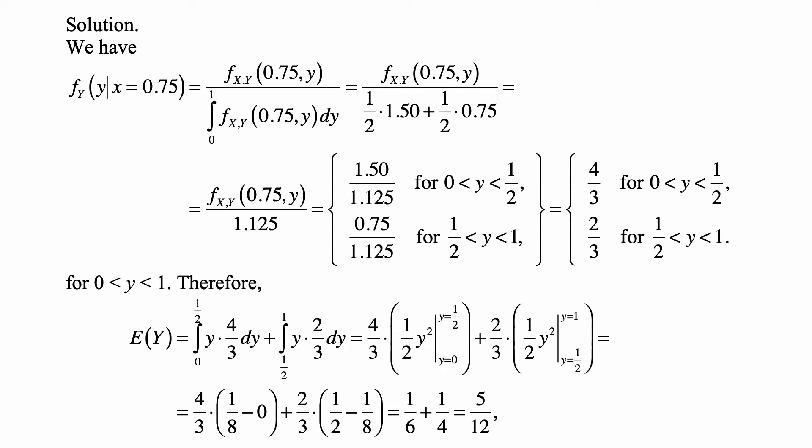And that's equal to 1.50 over 1.125 for y between 0 and 1/2, and 0.75 over 1.125 for y between 1/2 and 1. So this conditional density is equal to 4/3 when y is between 0 and 1/2, and 2/3 when y is between 1/2 and 1.